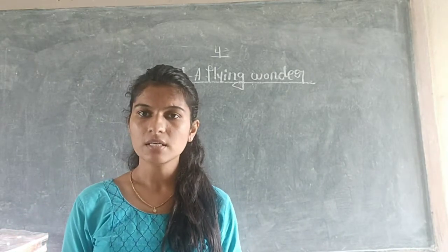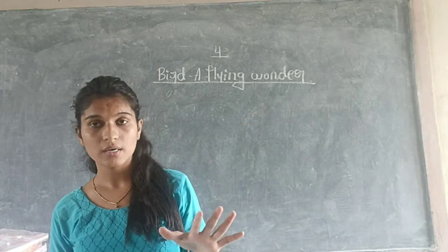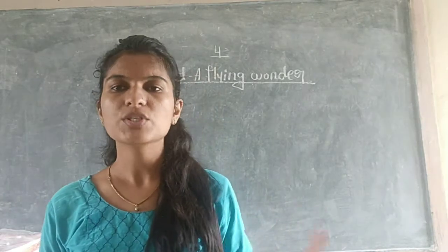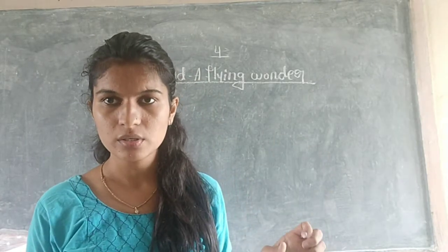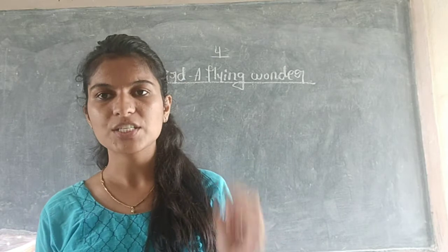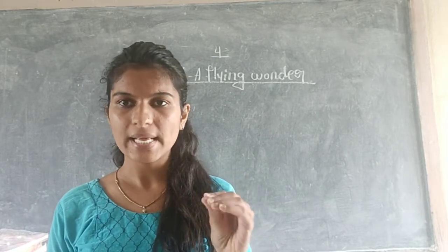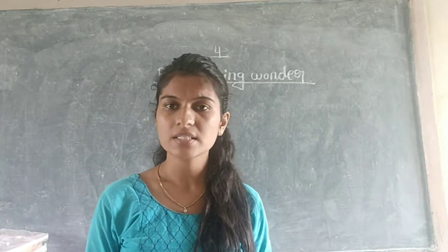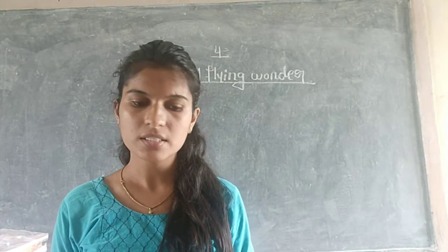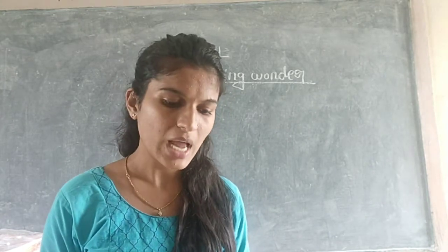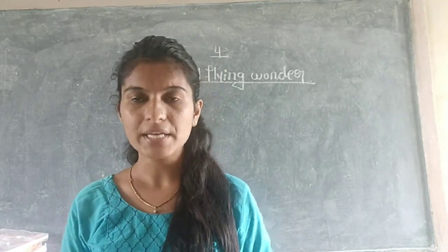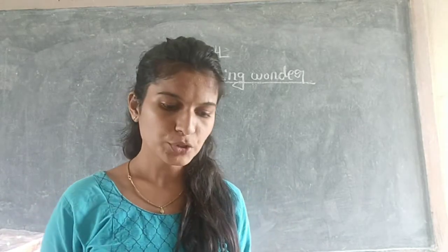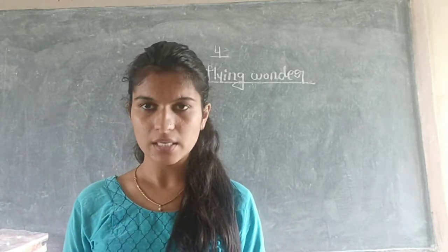All birds have different kinds of beaks which help them to eat their food or to catch their food or prey easily. Next, these birds have wings which help them to fly, and those wings are attached to their feathers.